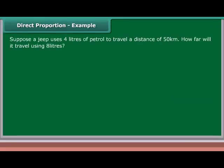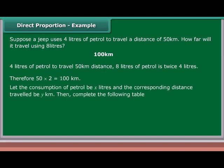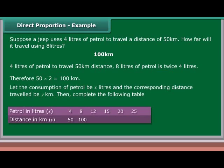Example: Suppose a jeep uses 4 liters of petrol to travel a distance of 50 kilometers. How far will it travel using 8 liters? The answer is 100 kilometers. 8 liters of petrol is twice 4 liters, therefore 50 into 2 equals 100 kilometers. Let the consumption of petrol be x liters and the corresponding distance traveled be y kilometers, then complete the following table.